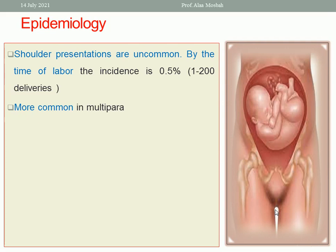What about the incidence? The incidence is 0.5% in full-term pregnancy. Transverse lie or shoulder presentation is more common in multiparae with lax anterior abdominal wall muscles.